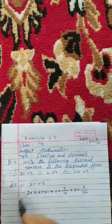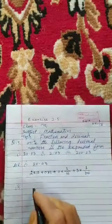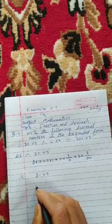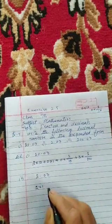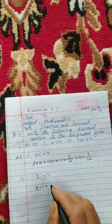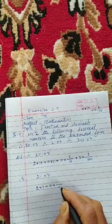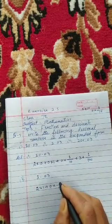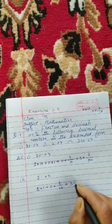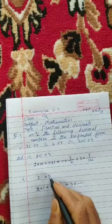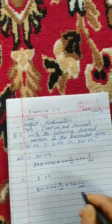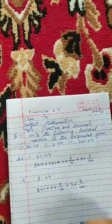20.03: this is 2 into 1, 2 into 1 plus 0 which is 1 upon 10, 1 upon 10 plus 3 into 1 which is equal to 3, which is equal to 1 upon 100.